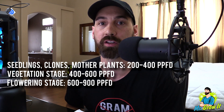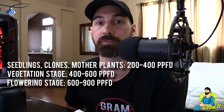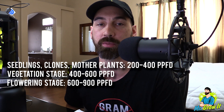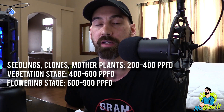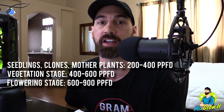On the screen right now I'll show you the optimal PPFD measurements for MJ plants — this is based on the light actually hitting your plants. For seedlings, clones, and other plants, the optimal range is 200 to 400 PPFD. In the vegetation stage, 400 to 600 PPFD is optimal. In the flowering stage, 600 to 900 PPFD is optimal.